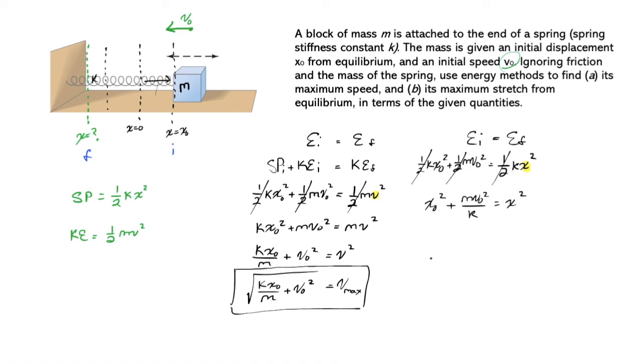And now taking the square root of both sides, you find that the maximum displacement is the square root of x naught squared plus m v naught squared over k.